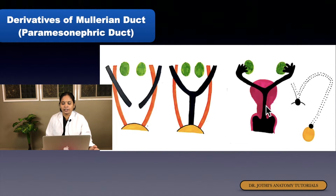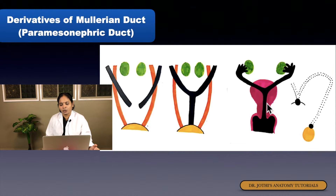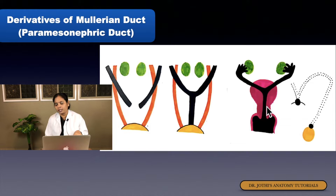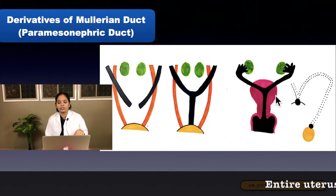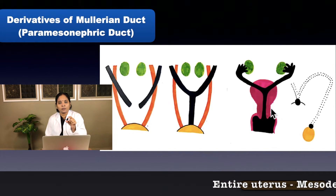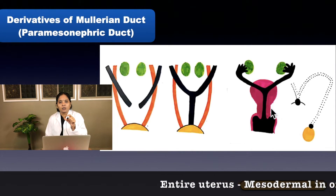From the uterovaginal canal, the entire uterus develops — including the uterus and cervix — from this uterovaginal canal within the urorectal septum. The paramesonephric duct is mesodermal in origin, so the entire uterus is mesodermal in origin. That is an important MCQ point.